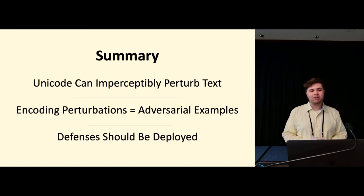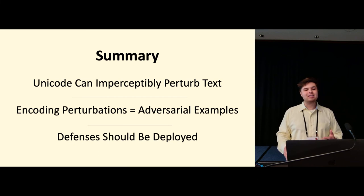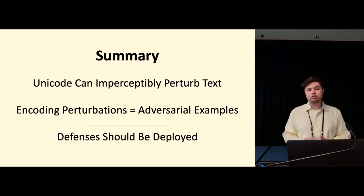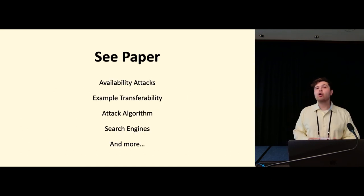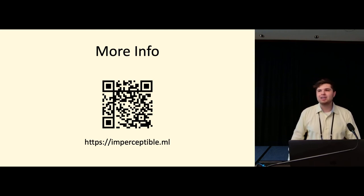So let's just do a final summary to conclude here. Unicode can imperceptibly perturb text and these encoding level perturbations functionally equate to adversarial examples that we can use against various machine learning models. And defenses should be deployed against these attacks. So we have a whole bunch more things in the paper. I would encourage you to check it out. We talk about availability attacks, attack transferability, the specific algorithms we're using, search engines, and a whole bunch more. You can find a summary of the paper at this website, imperceptible.ml, as well as a link off to the actual paper itself. Once again, my name is Nicholas Boucher. Thank you very much for attending this talk, and I would be happy to take any questions.